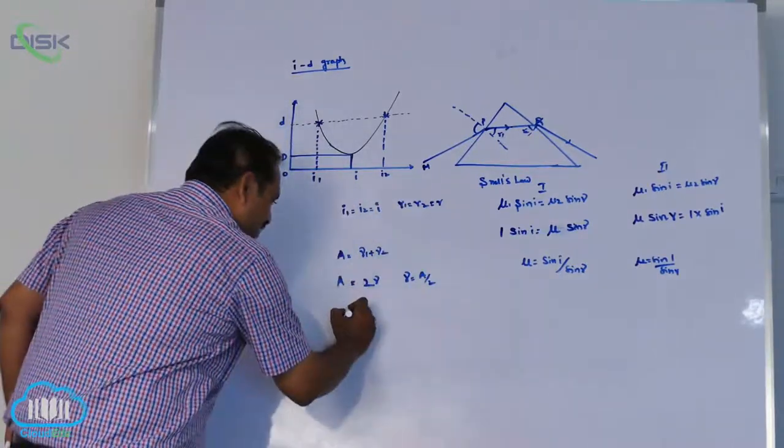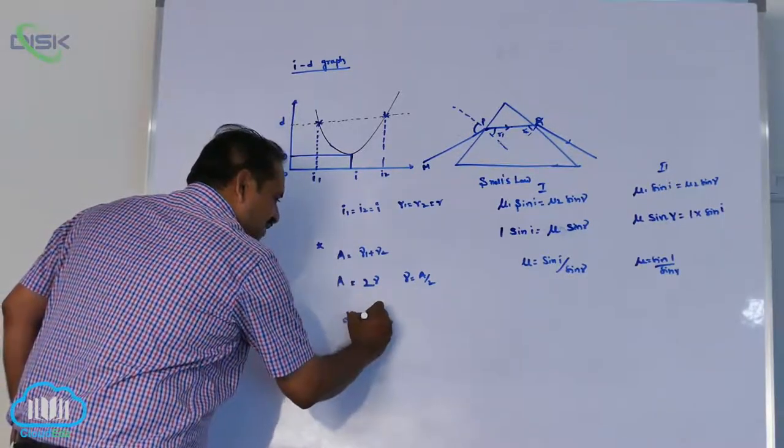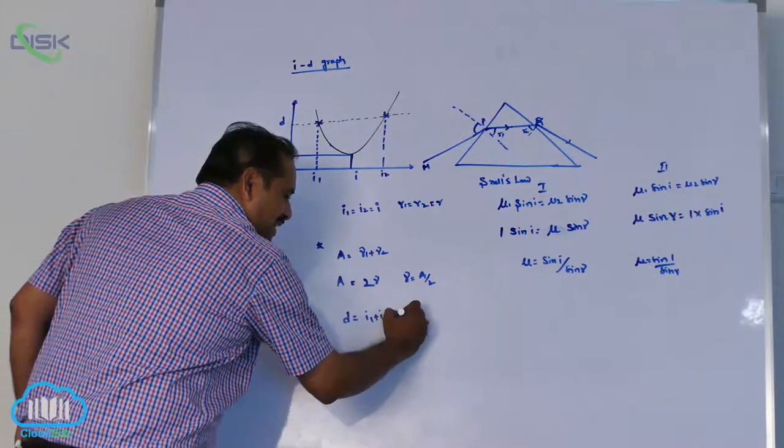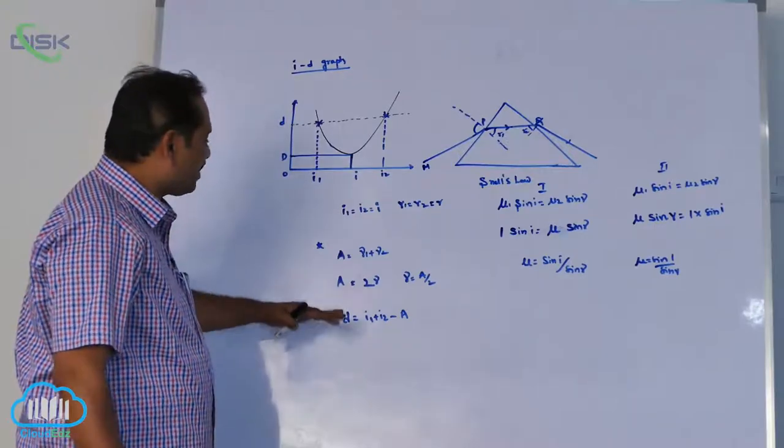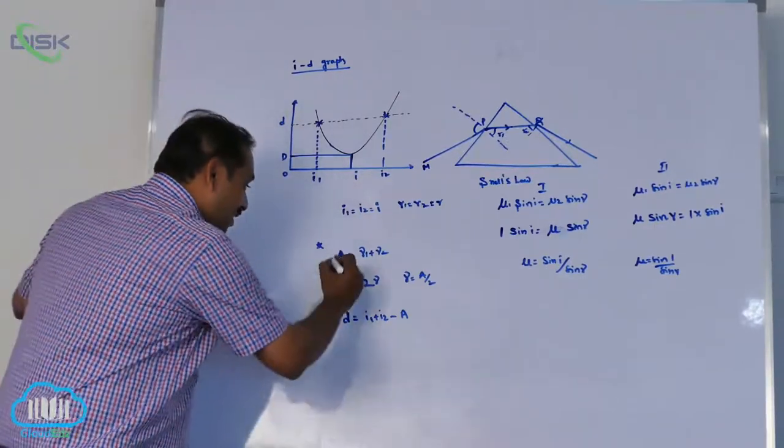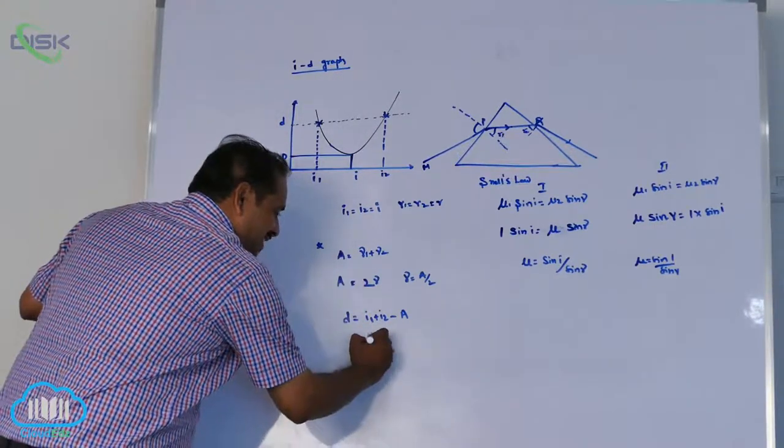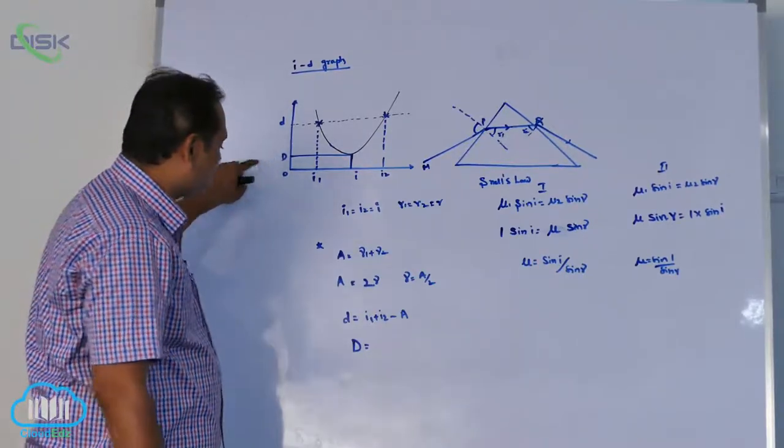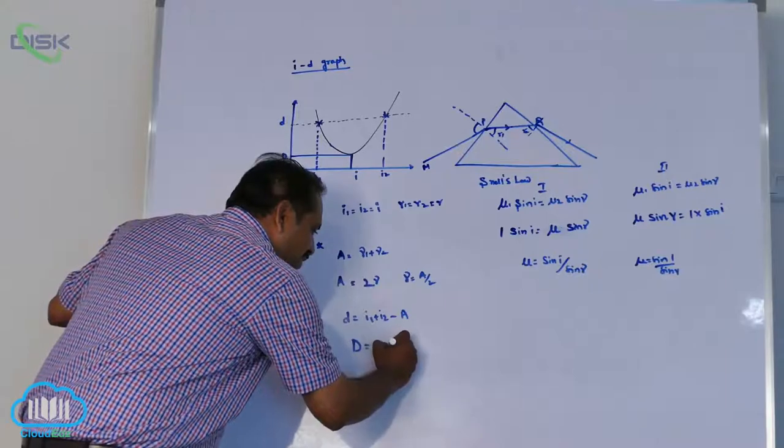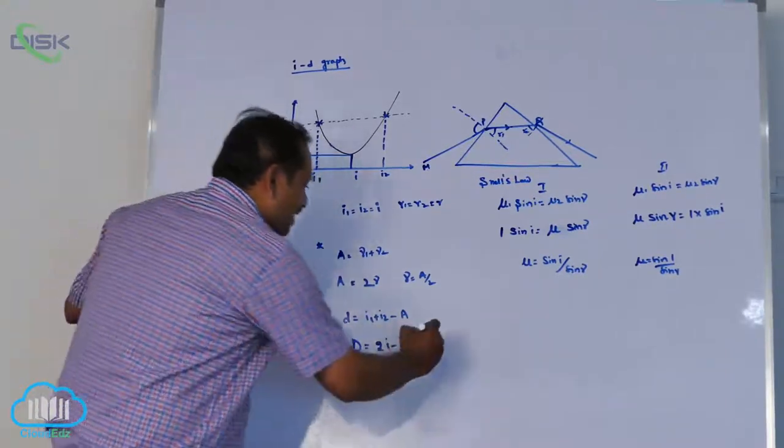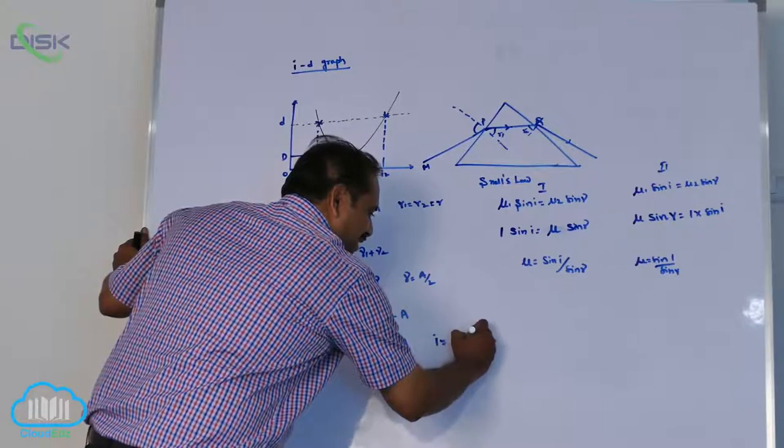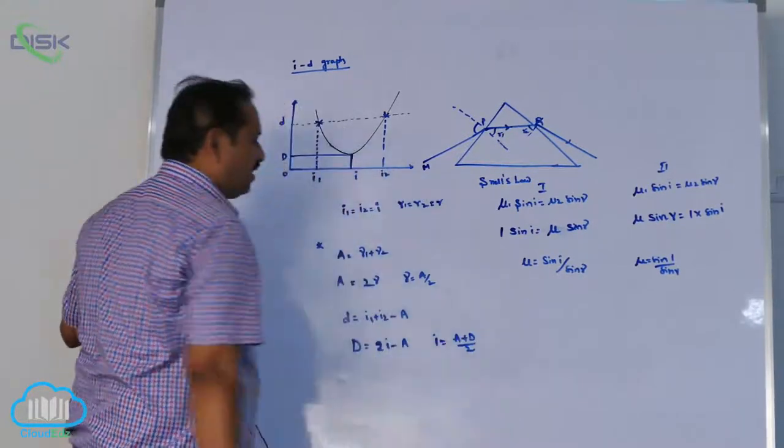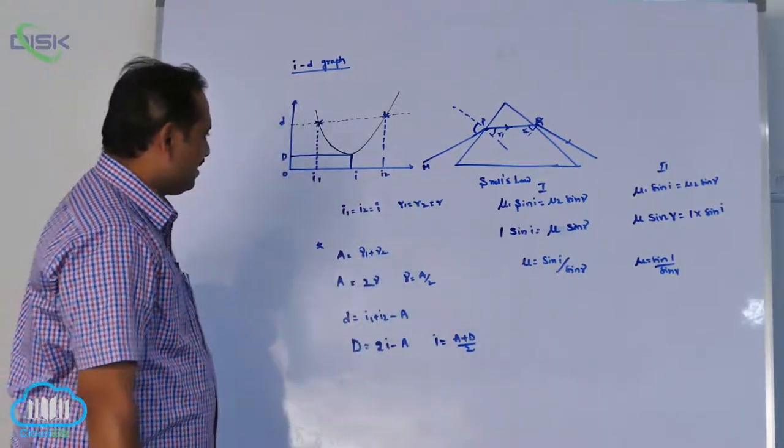Previously we got condition like this: D equal to i1 plus i2 minus a. This is also one of the important concrete bits. D equal to, what d? Not all d's, minimum deviation I am representing with capital D. Capital D equal to 2i minus a. i equal to a plus D by 2 is the condition for angle of incidence.